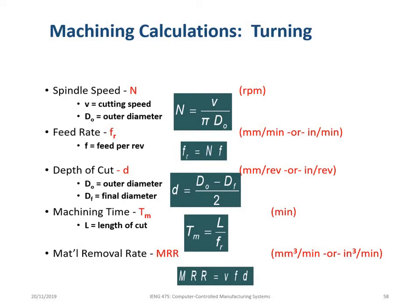Machining calculations for turning operations on lathes has several parameters such as spindle speed, cutting speed, feed rate, depth of cut, and machining time. Material removal rate could be an objective function. Cutting speed and depth of cut could be process parameters.